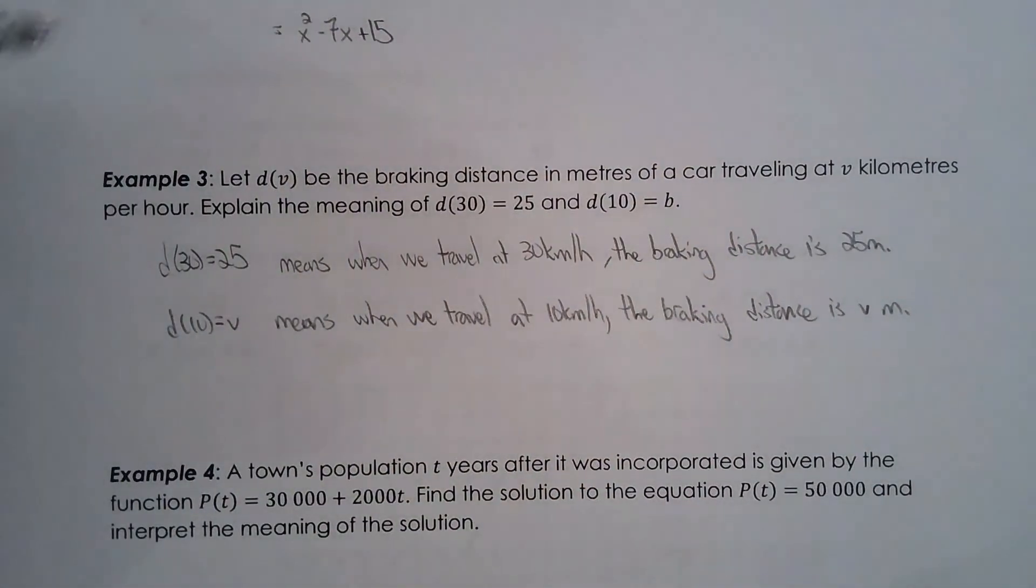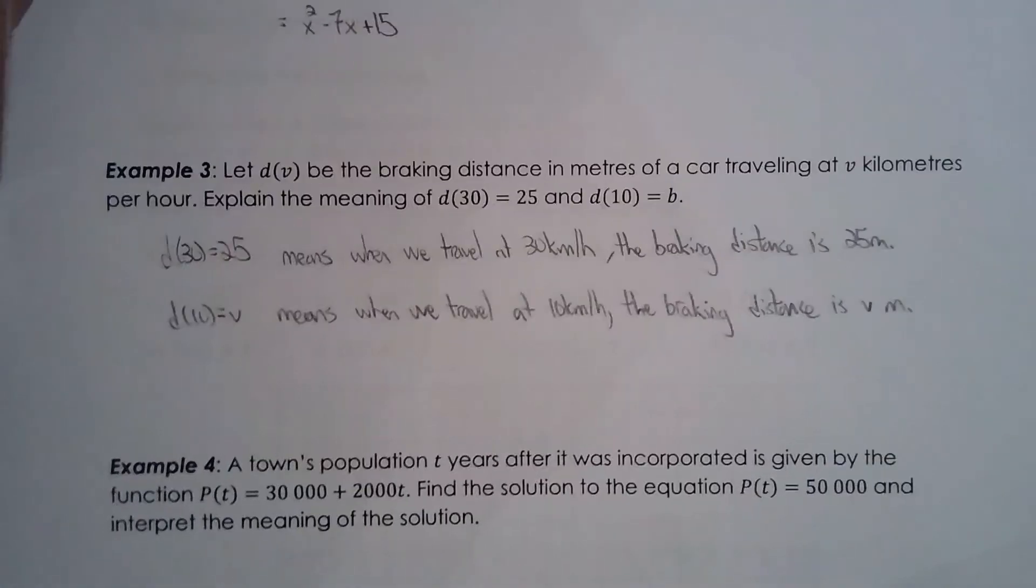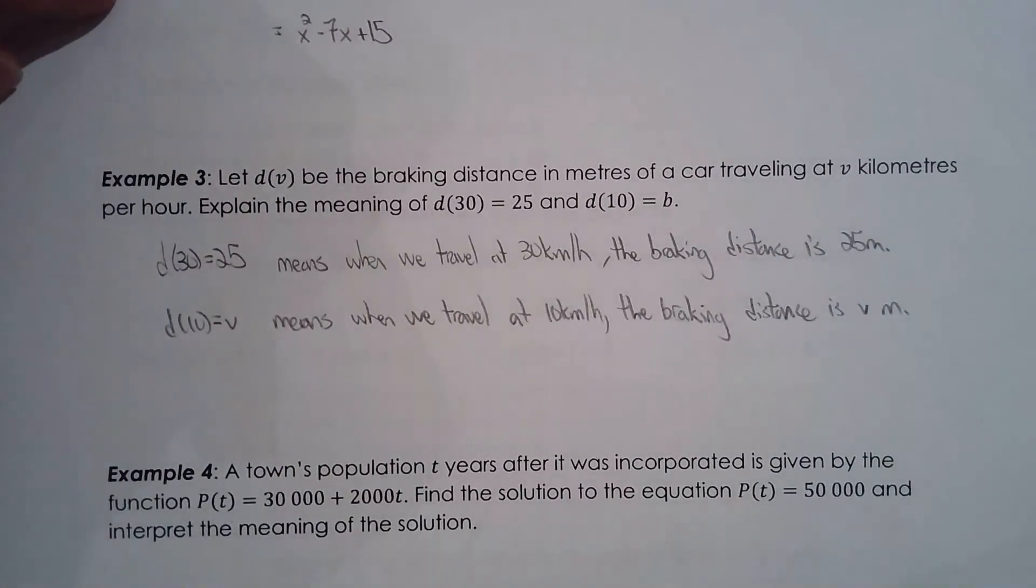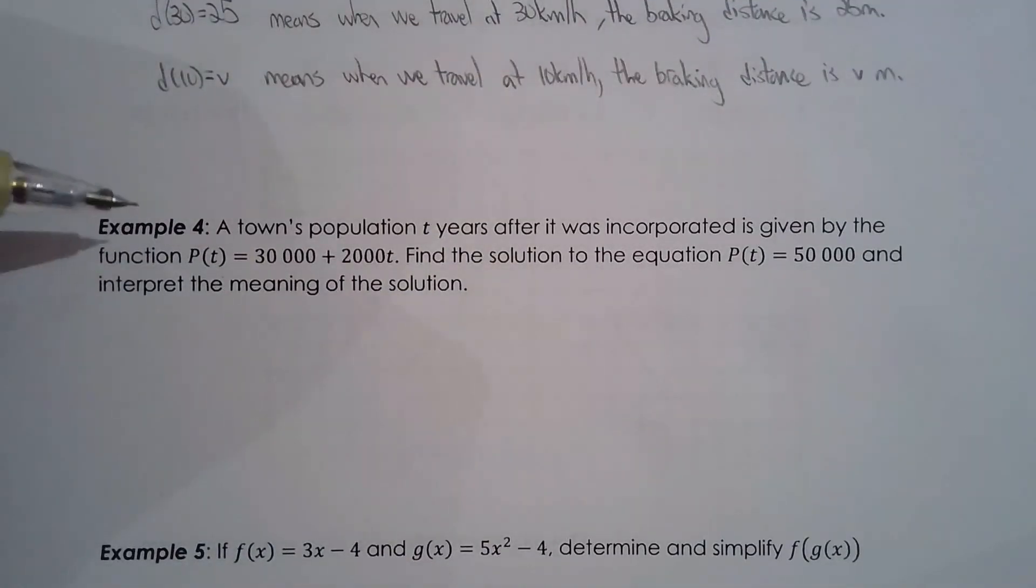Think of the functions in terms of input and output, because that's going to help with the next unit as well. A town's population t years after it was incorporated is given by the function p of t equals 30,000 plus 2000t. This is very reminiscent of what you did in grade 9. This is a linear function.